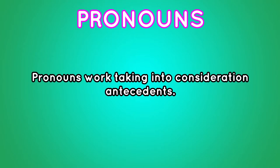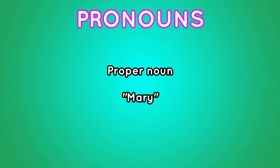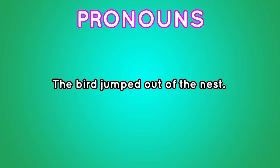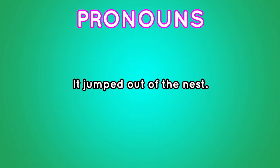It is important to know that pronouns work taking into consideration antecedents. This means that if we have a proper noun like Mary, we can substitute it with the pronoun "she" and not with other pronouns that won't make sense. Let's check the previous example: "The bird jumped out of the nest." We can substitute one noun with a pronoun like this: "It jumped out of the nest."